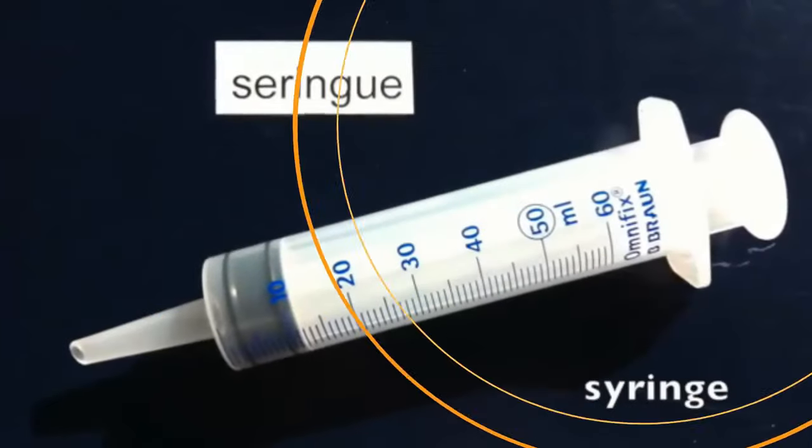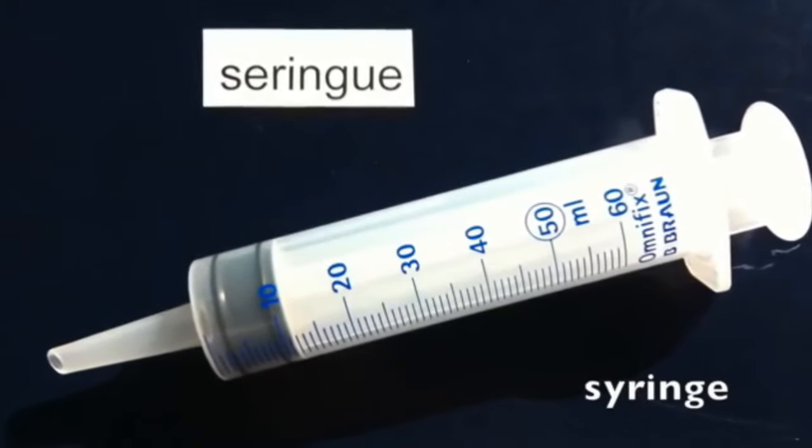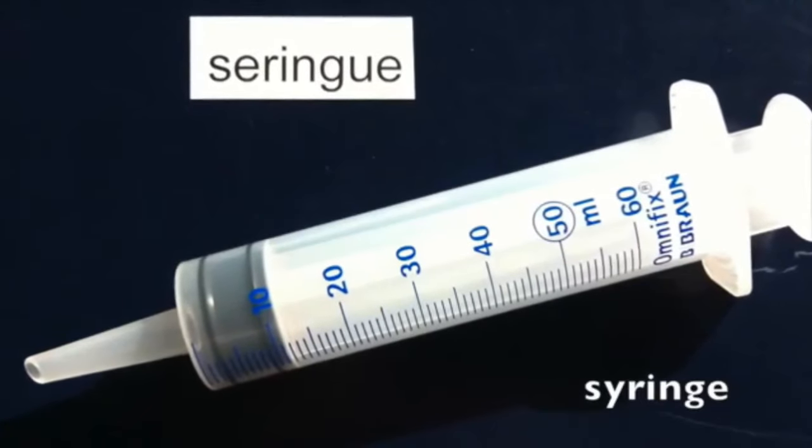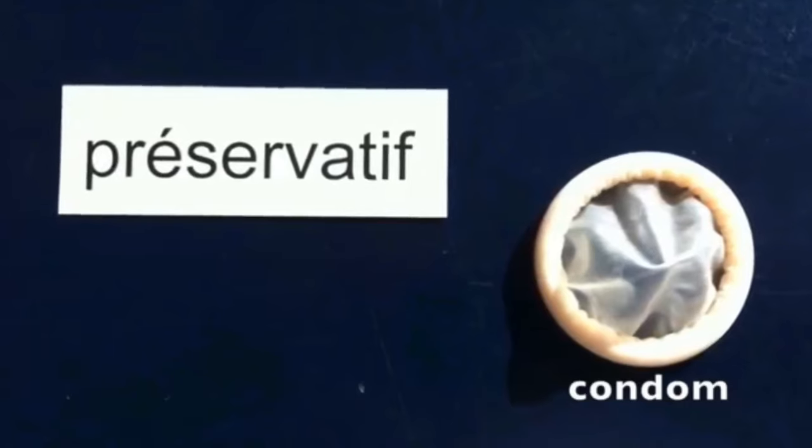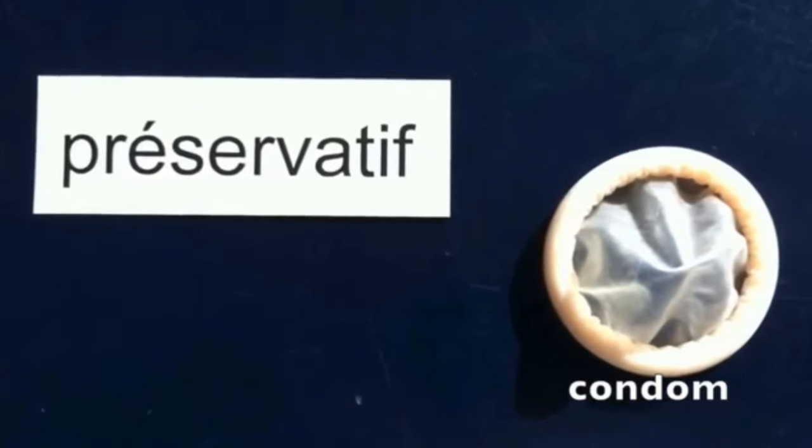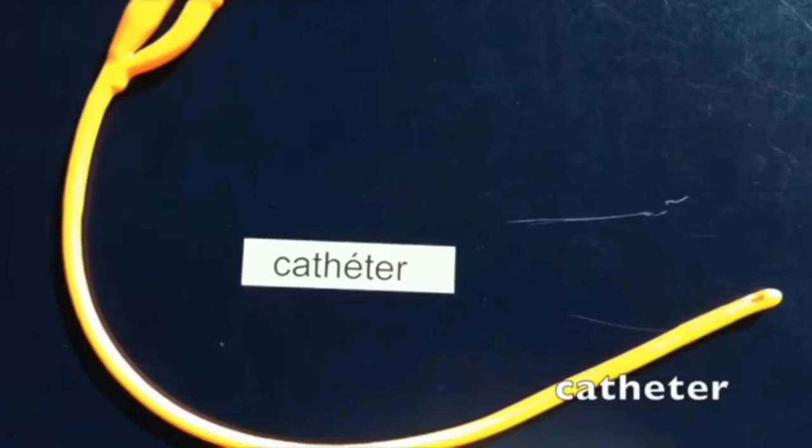We are going to tell you how we make a balloon tamponade. We will first share with you the equipment required for making a balloon tamponade, which should all be sterilized. We need a 50 ml syringe, which you can see here. Secondly, we need a condom, then we need a number 20 Foley's catheter—actually, the thickest Foley's catheter should be number 20.